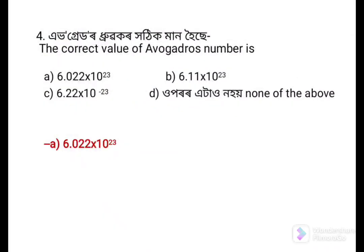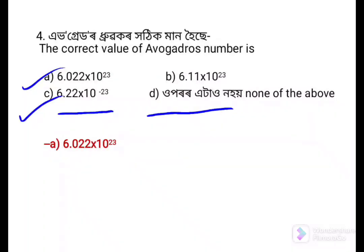Next question: The correct value of Avogadro's number is — Option a: 6.022 into 10 to the power 23, Option b: 6.11 into 10 to the power 23, Option c: 6.22 into 10 to the power minus 23, Option d: None of the above. The answer is Option a: 6.022 into 10 to the power 23.